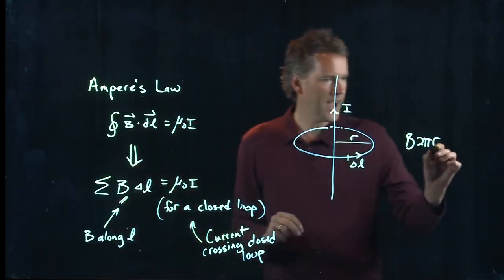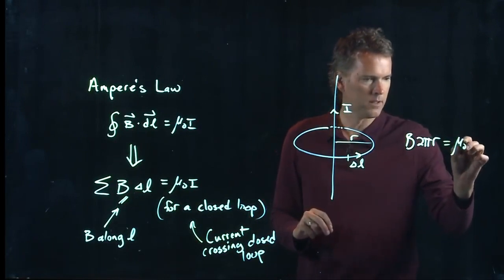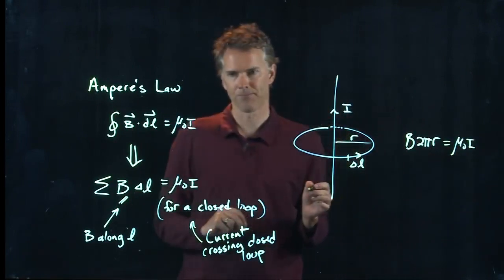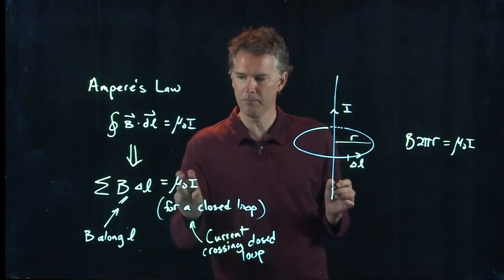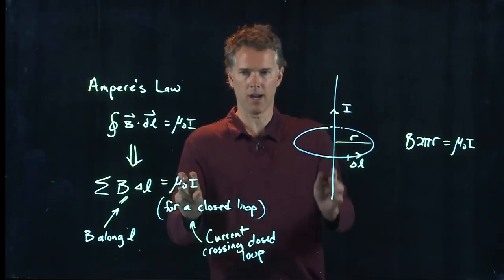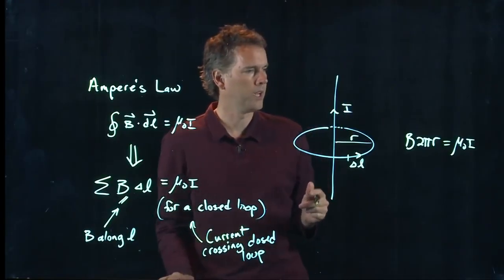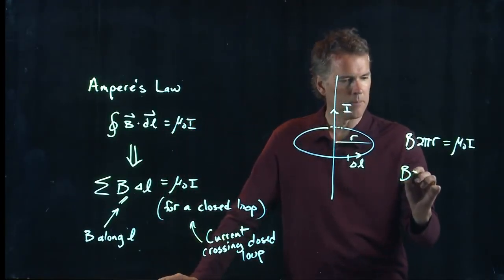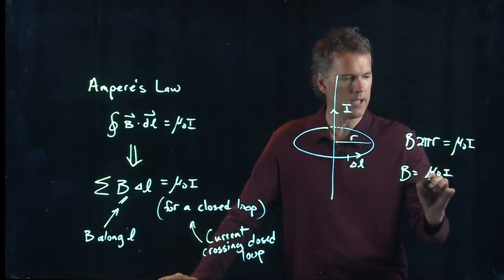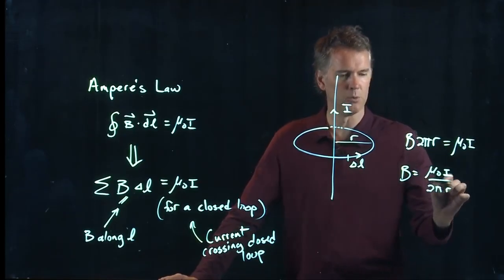The right side says how much current is being intercepted. How much current is being intercepted? In this case is I. There's only I that's crossing my closed loop. And so we get back to what we already knew: B is μ₀I divided by 2πr.